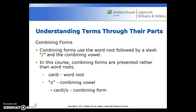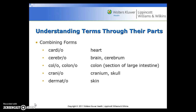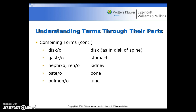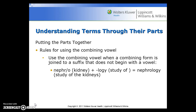Looking at those word roots with their combining vowels attached: cardio for heart, cerebro for brain or cerebrum, colo or colono for colon, cranio for cranium or skull, dermato for skin, disco for disc, gastro for stomach, nephro or reno for kidney, osteo for bone, and pulmono for lung.